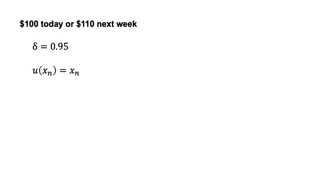Example 1: $100 today or $110 next week. Alison is an exponential discounter with discount factor delta equals 0.95 and utility each period of u equals xn.